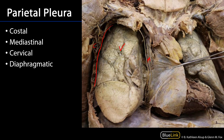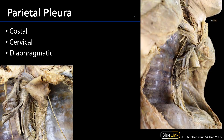We can see the phrenic nerve descending down through this space on its way down to meet the diaphragm, which we can see here. There's the right cupula of the diaphragm, and so this would be the diaphragmatic pleura. The clavicle is in the way here, so seeing that cervical pleura is going to prove difficult.